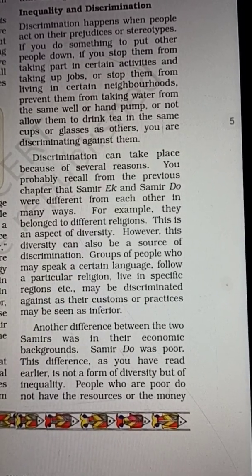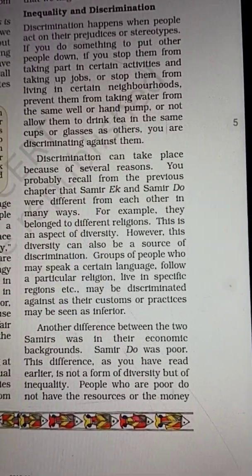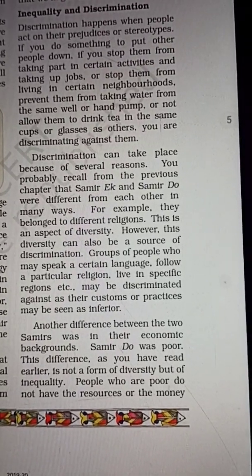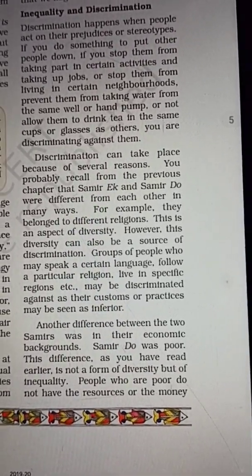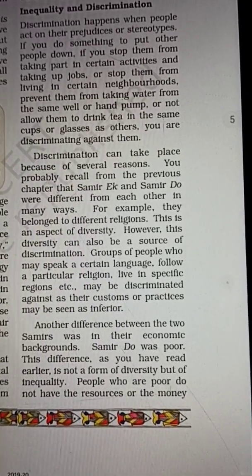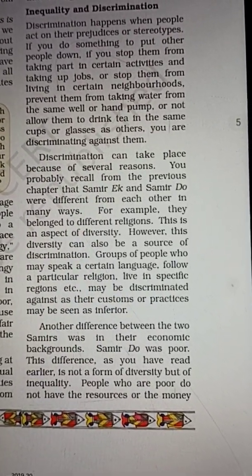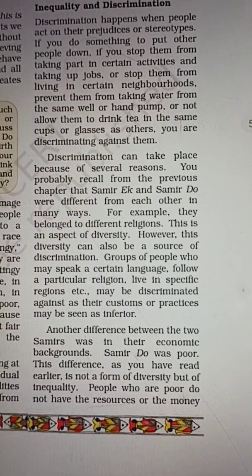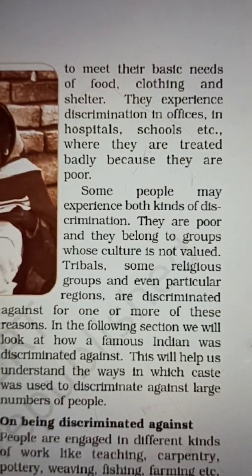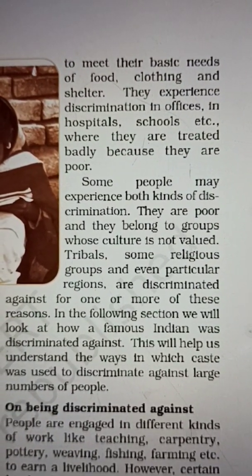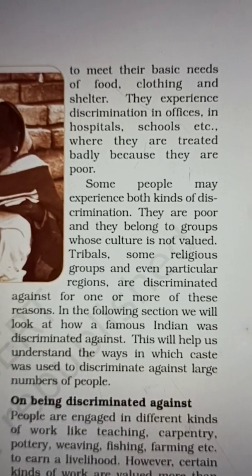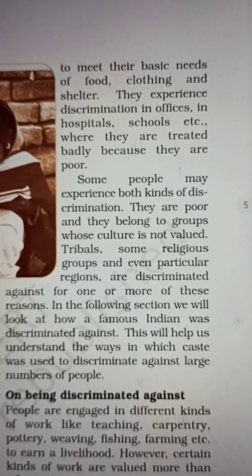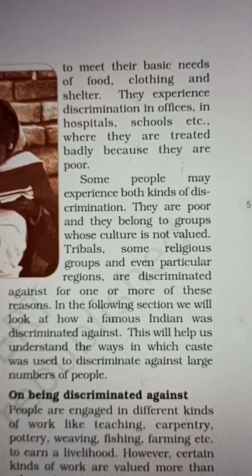This difference, as you have read earlier, is not a form of diversity but of inequality. Ab dekhiye, hum log padhe the ki pichle chapter mein ki do Sameer alag-alag economy background mein — ek garib tha aur ek ameer hai. Toh ismein koi diversity nahi aata hai, ismein hum log inequality ko dikha rahe hain. People who are poor do not have the resources or the money — jo log garib hain unka koi paisa nahi hai — to meet their basic needs of food, clothing, and shelter.